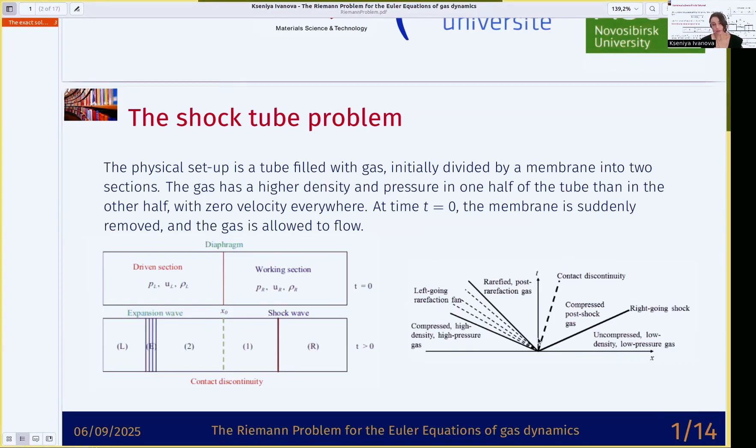The flux comes from the Riemann solvers. For example, HLLC solver takes into account all three waves. HLL takes into account only fastest and slowest waves, so HLL takes into account only two waves.